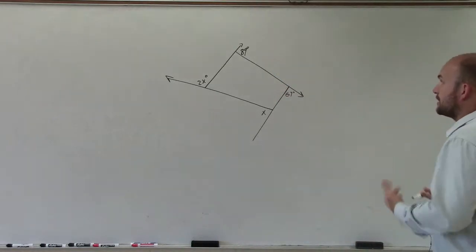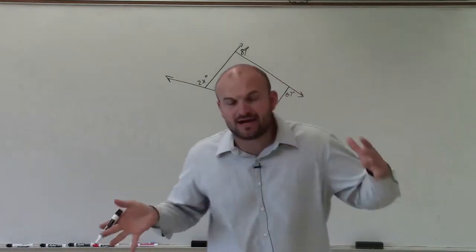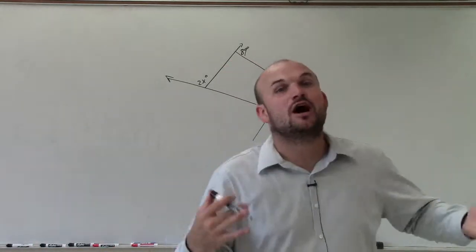Now remember, the sum of exterior angles for any polygon, doesn't matter how many sides you have, is always going to equal 360.